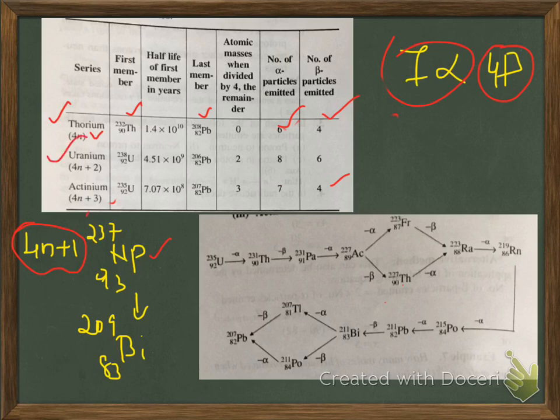In the same way, the uranium series is the 4n+2 series — not 4n+1. After 4n, we have 4n+2 in the natural series. 4n+1 exists but that is the artificial series. The uranium series starts with uranium-238 and the end element is lead-206 — another isotope of lead. Here, 8 alpha and 6 beta particles are respectively emitted.